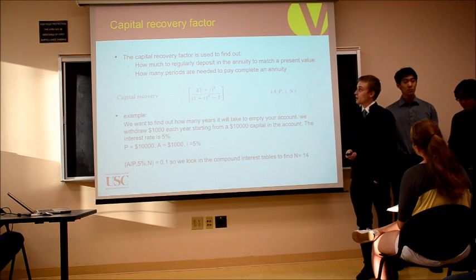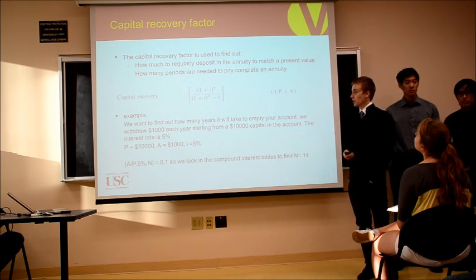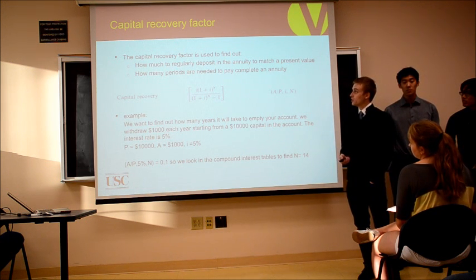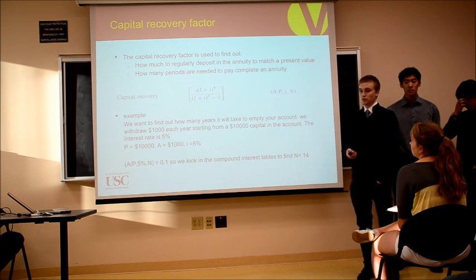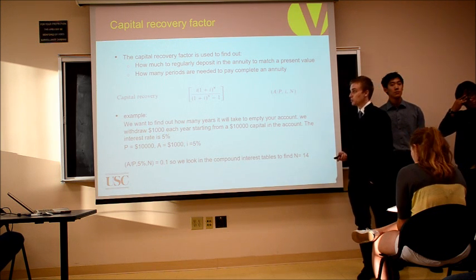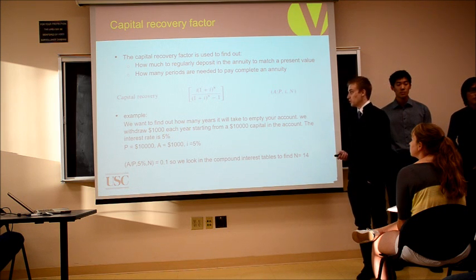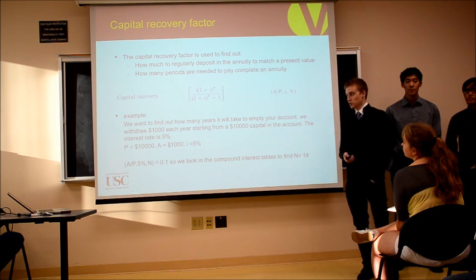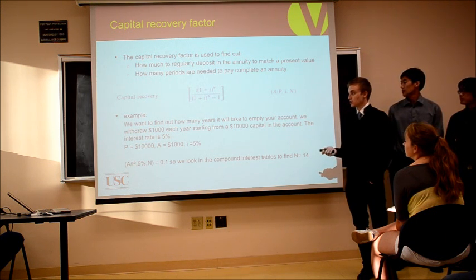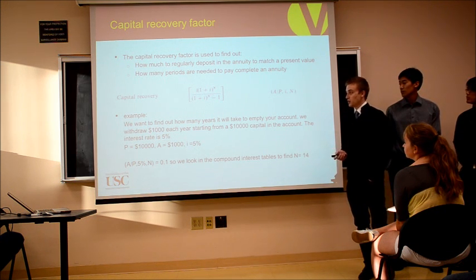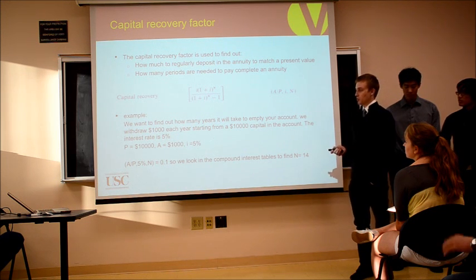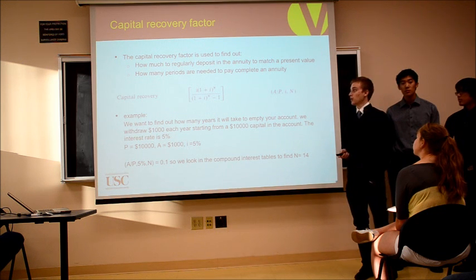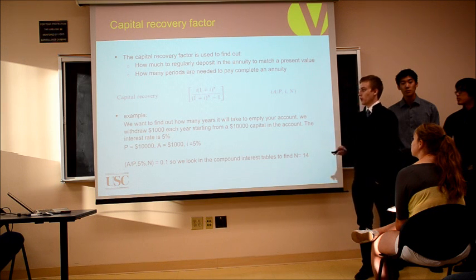Another factor is the capital recovery factor, used to find out how much we would regularly deposit or withdraw from an annuity to match a present value, or how many periods we'd need to complete the annuity. For example, we want to find how many years it will take to empty an account withdrawing $1,000 each year, starting from $10,000 capital with a 5% interest rate. Our present value is $10,000, annuity is $1,000, and interest rate is 5%. It's hard to solve for N directly, but by looking into the compound interest tables, we find it would require 15 periods to empty the account.